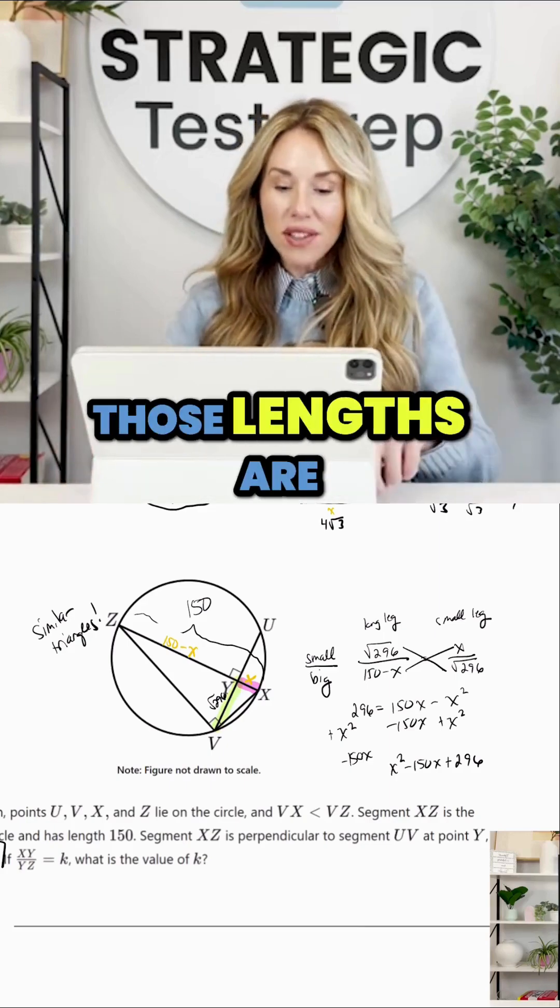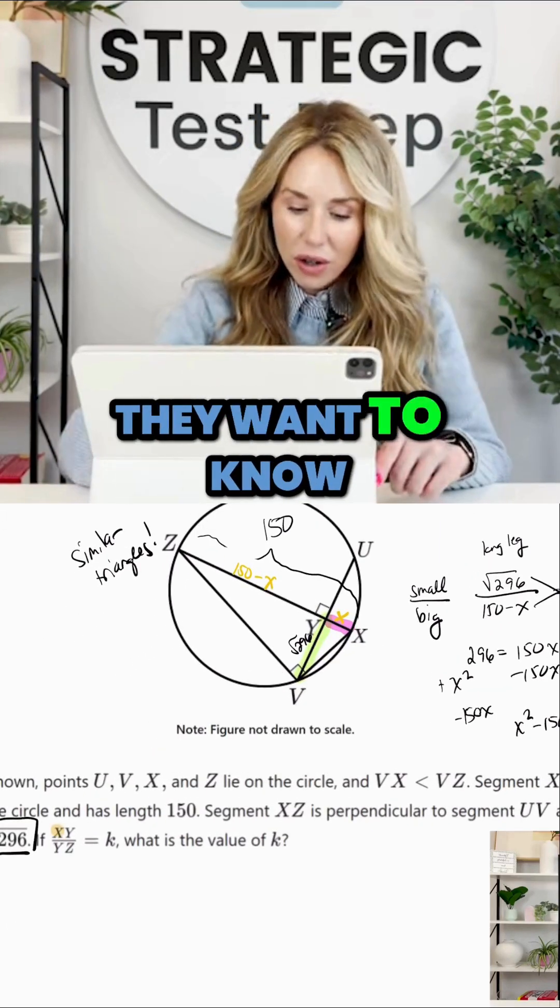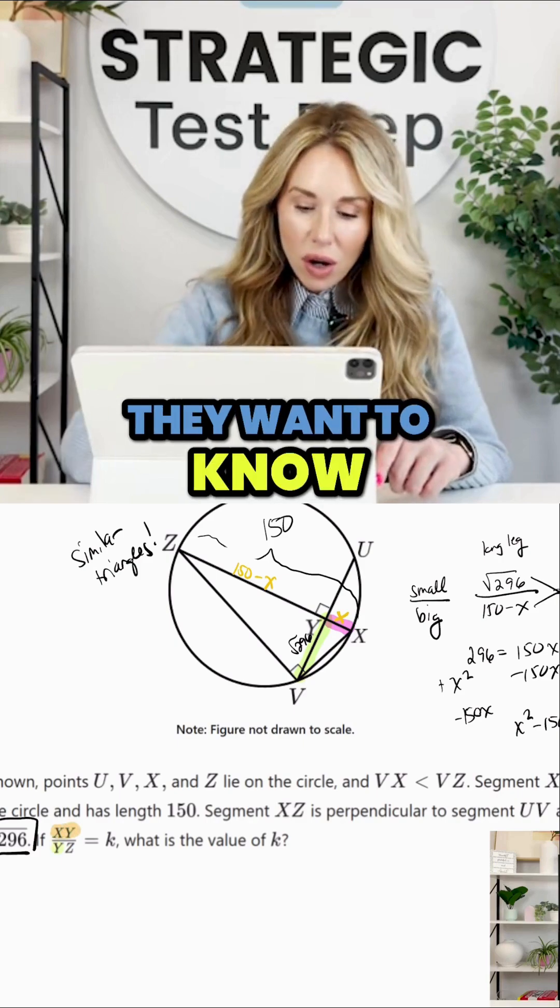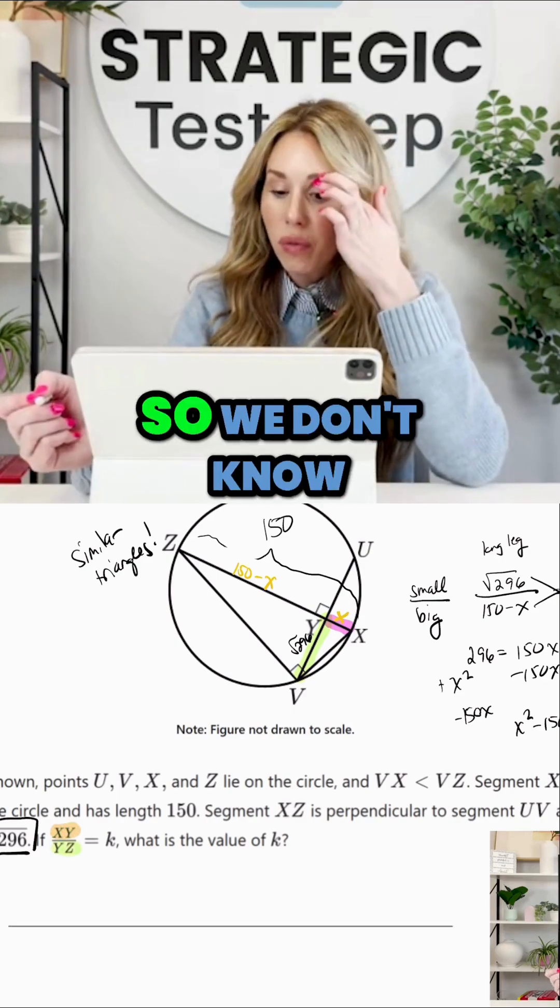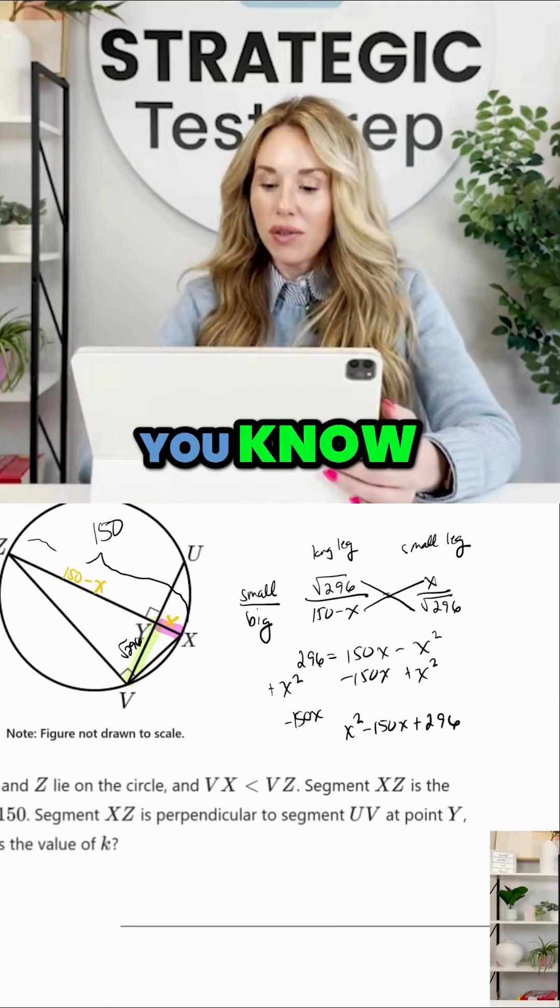We don't know what those lengths are. And that's honestly what the question is asking for. They want to know what XY is and they want to know what YZ is. So we don't know that yet until we can solve this in Desmos. So X squared minus 150X plus 296.